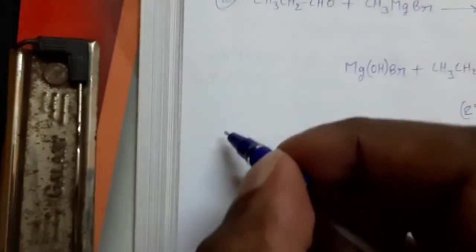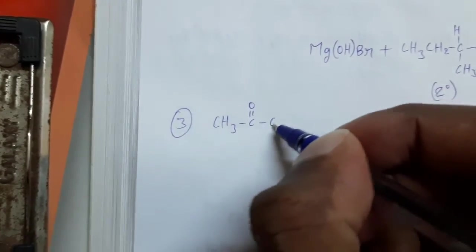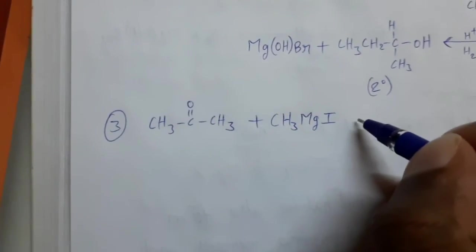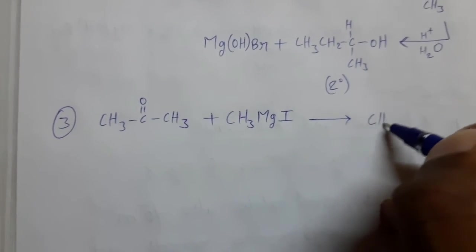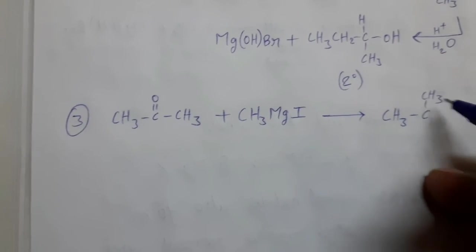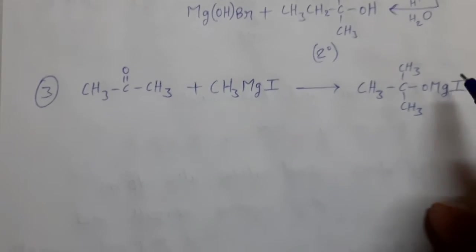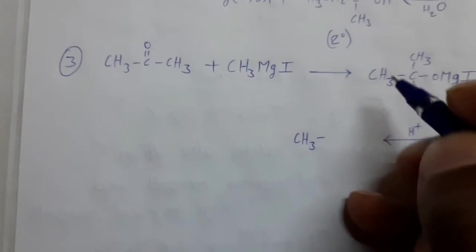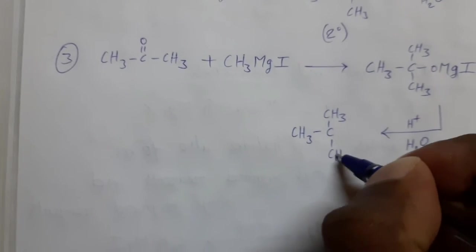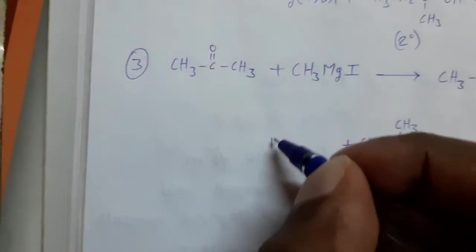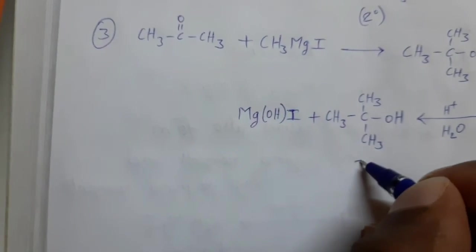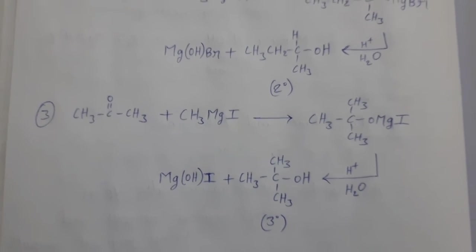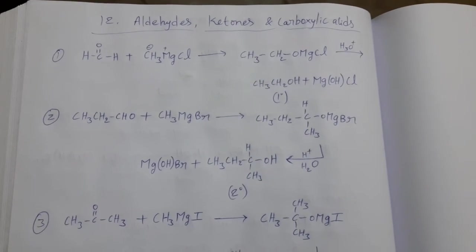Now, the reaction of ketones with Grignard reagents. For example, acetone (CH₃COCH₃) reacts with methyl magnesium iodide (CH₃MgI). The addition product formed is (CH₃)₃COMgI. On acidic hydrolysis, this gives the tertiary alcohol (CH₃)₃COH plus MgOHI. So ketones react with Grignard reagents to form tertiary alcohols. These are the reactions of aldehydes and ketones with Grignard reagents.